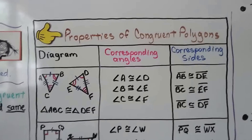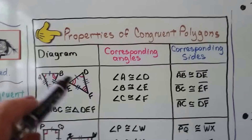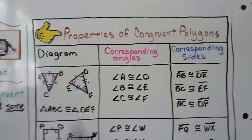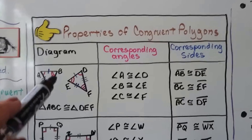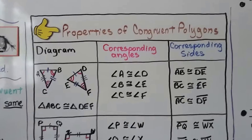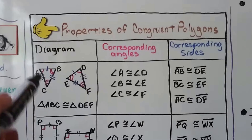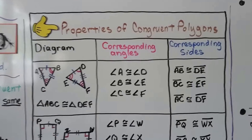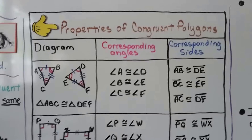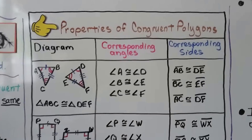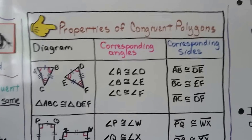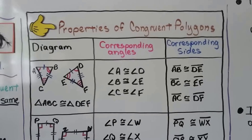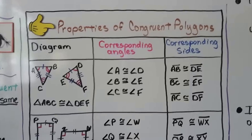Same with the sides: one tick mark means it's congruent to this one with one tick mark. This side with two is congruent to that side with two, and this side with three is congruent to that side with three. And because the three sides and three angles are congruent, the triangles are congruent to each other.